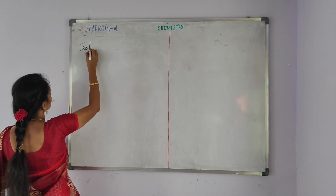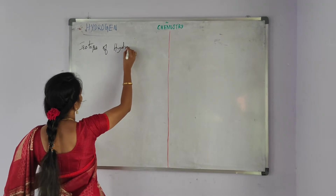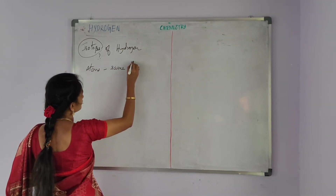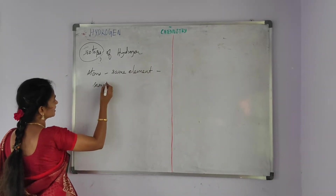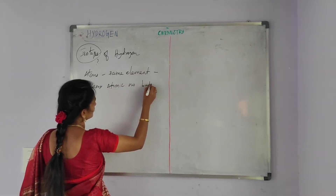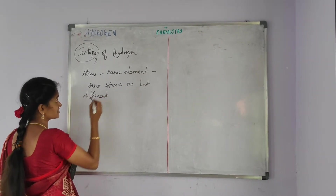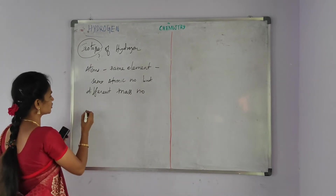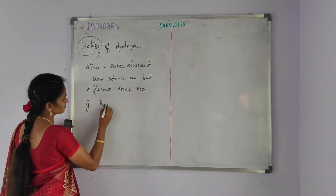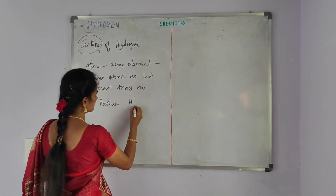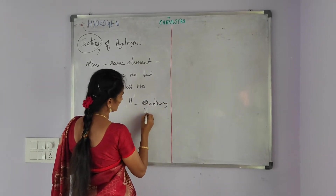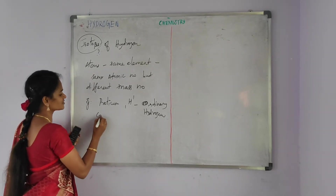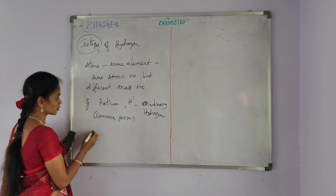Our next topic is isotopes of hydrogen. What are isotopes? Atoms of the same element that have the same atomic number but different mass numbers are called isotopes. The first isotope of hydrogen is protium (¹H¹). Protium is also called ordinary hydrogen and is the predominant and most common isotope of hydrogen.